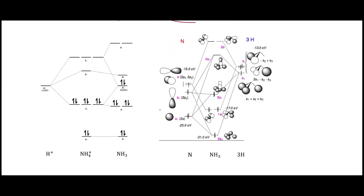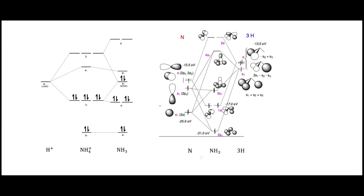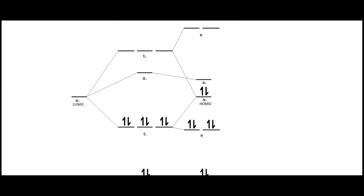These are the molecular orbital diagrams — this one is for ammonia. I wanted to put this here just to show where the molecular orbital diagram for ammonium comes from. We have up here an a₁ orbital, then this a₁ here which is our HOMO, then these degenerate e orbitals, and then this a₁ down here.